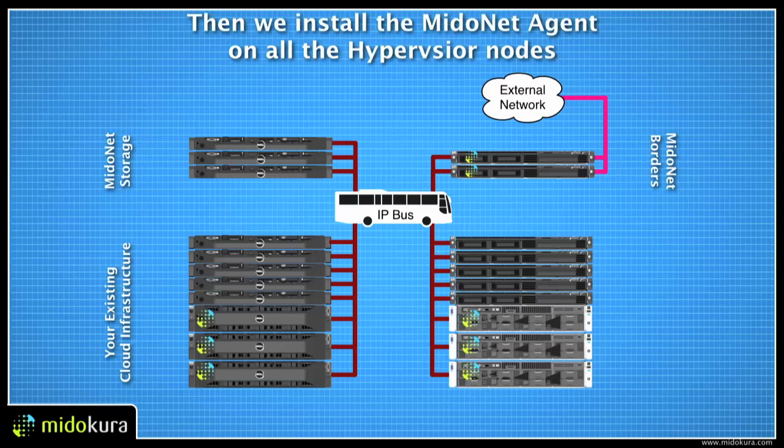The first thing that we do is install our agent on all of the hypervisors. It's a very thin agent that operates only once on each hypervisor for any of the VMs operating there. The same agent is also installed on any nodes that connect to the external network to perform BGP and topology management for those nodes.